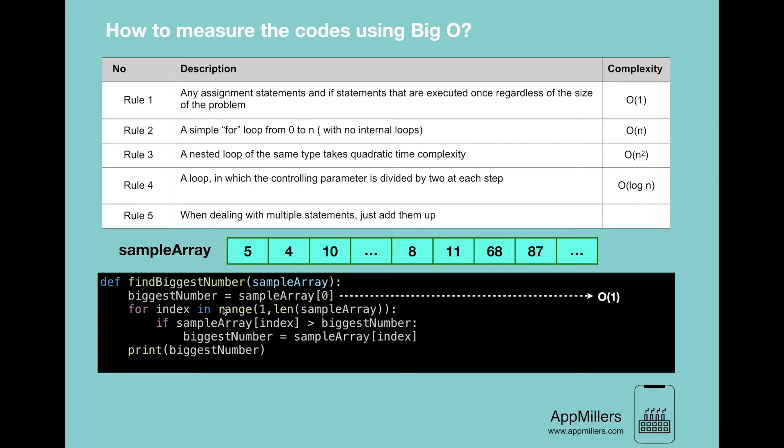Then we continue to the second line of this code. Here we created loop. So according to the second rule, loop takes linear time complexity, which means that here it takes O(n) time complexity.